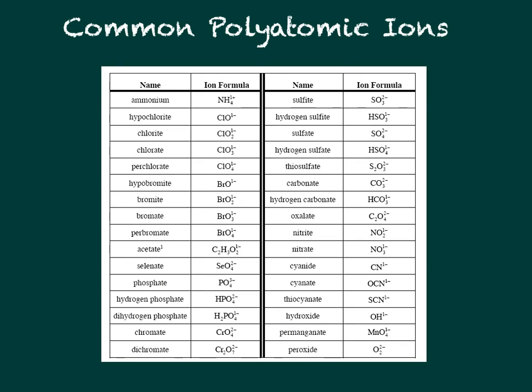This table shows common polyatomic ions. Some of the most common include ammonium, chlorate, acetate, phosphate, chromate, dichromate, sulfite, sulfate, and carbonate. You'll notice naming patterns: SO₃ is sulfite and SO₄ is sulfate — sulfate has one more oxygen atom than sulfite. In class, you'll be given a list of polyatomic ions; some must be memorized. Take time to make connections between the names and formulas.